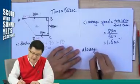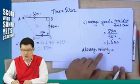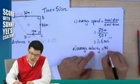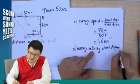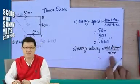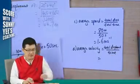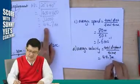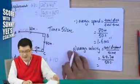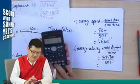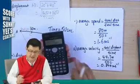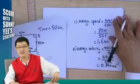However, if you are asked to find the average velocity, remember that velocity is a vector quantity. So average velocity uses displacement, not distance: it is displacement divided by time. The displacement is 44.7 meters, divided by 50 seconds, giving 0.894 meters per second as the average velocity.